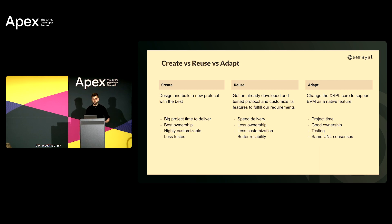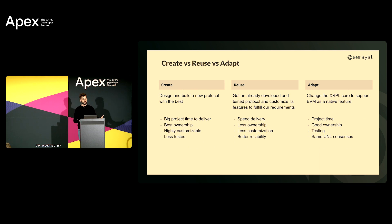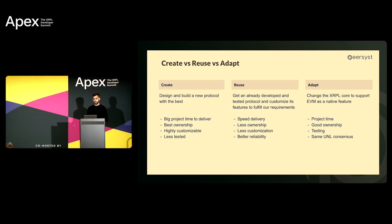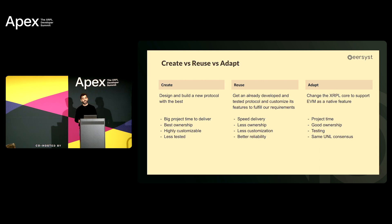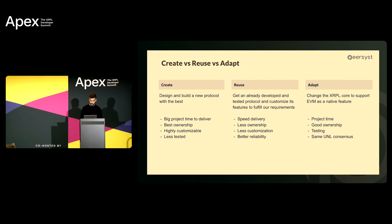The third option is reusing an actual working protocol — not Ethereum because it's outdated — which gives us speed of delivery since we don't have to reinvent the wheel, and very high reliability since those projects have already been live on mainnet and have not been hacked. The best candidates we found were Polkadot Moonbeam and the Avalanche subnet. The problem with Moonbeam is it's a huge codebase and code ownership is very difficult, plus there's no documentation. The problem with Avalanche is strong dependency on its ecosystem — you need AVA tokens to run a node, which doesn't align with empowering the XRP ledger community.